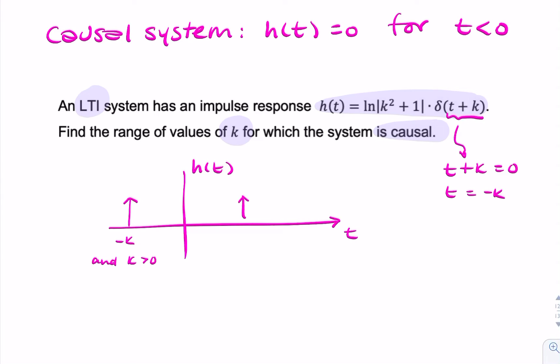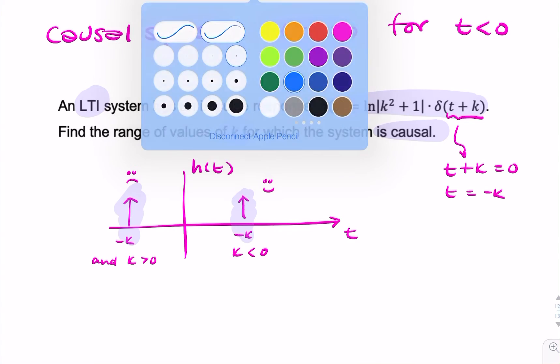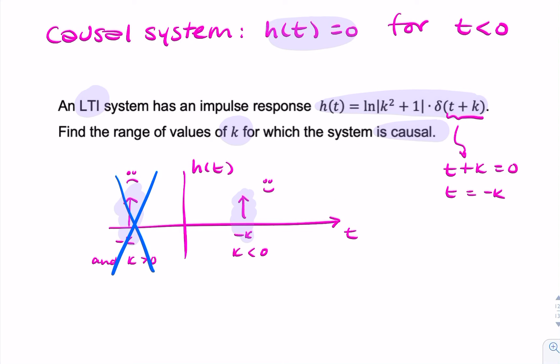And if k was negative, here would be t equals minus k, and k is less than zero. So for a causal system, that's okay, but that's not okay because we want h of t to be zero for negative time. So we can't accept that. What we can accept is that k is less than or equal to zero.